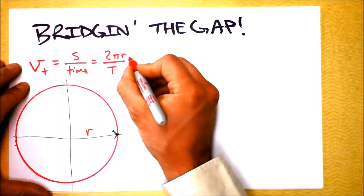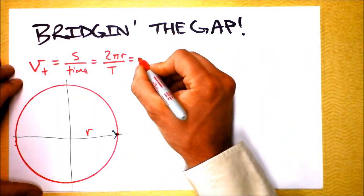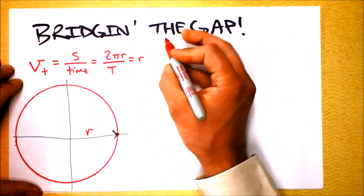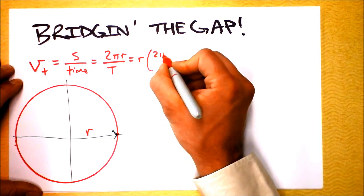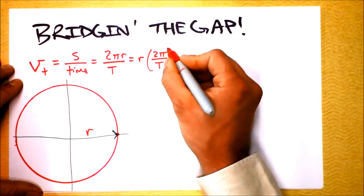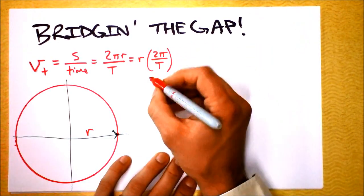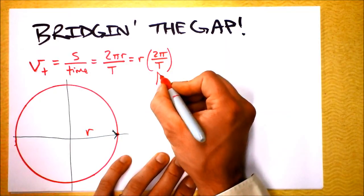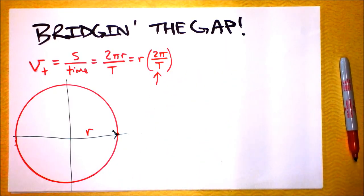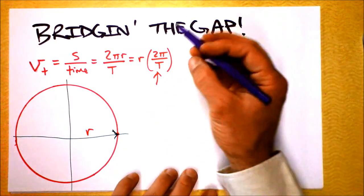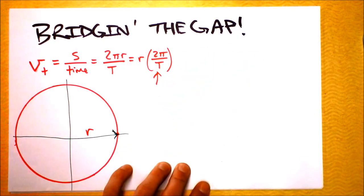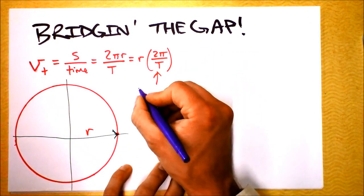So we can write tangential speed as r times the quantity 2π over period. You'll remember from a previous video that 2π over period is something worth thinking about — it has units of 1 over seconds.